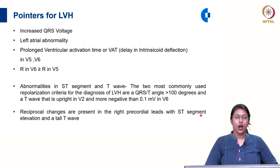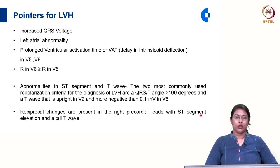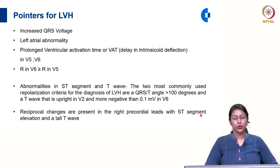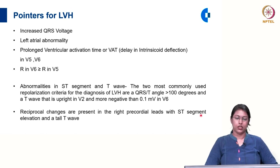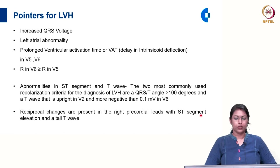If the amplitude of R in V6 is more than or equal to R in V5, that is also suggestive of LVH. Because of abnormalities in depolarization — especially in concentric hypertrophy — there are associated abnormalities in repolarization, including ST-T segment changes. The two most commonly used repolarization criteria for LVH are a QRS-T angle more than 100 degrees, and a T wave that is upright in V2 but more negative than 0.1 millivolt in V6. ST-T segment abnormalities are therefore also suggestive of LVH.